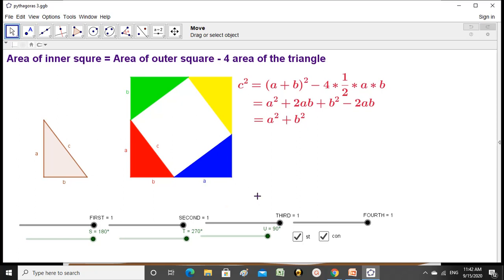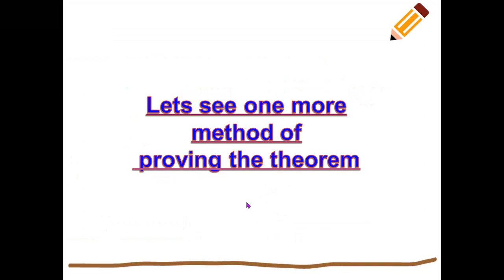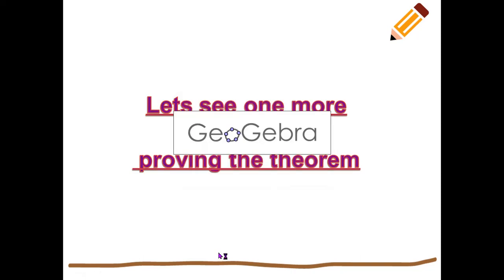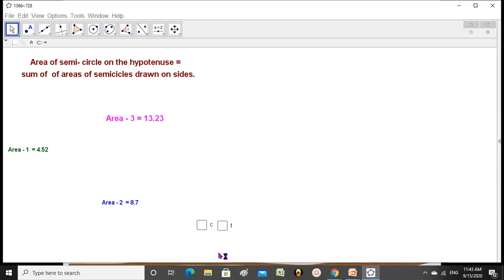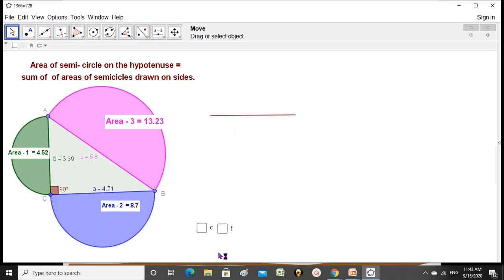Yet another method — this is the fourth one. We can draw semicircles on the sides of a right-angled triangle. Even the areas of semicircles follow the same rule: the area of the semicircle drawn on the hypotenuse is equal to the sum of areas of semicircles drawn on the other two sides.